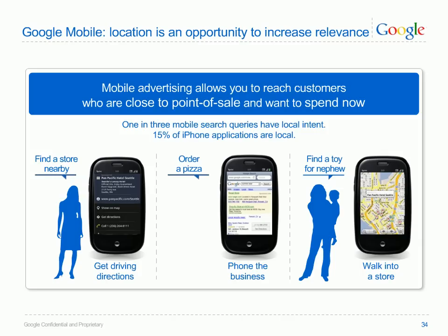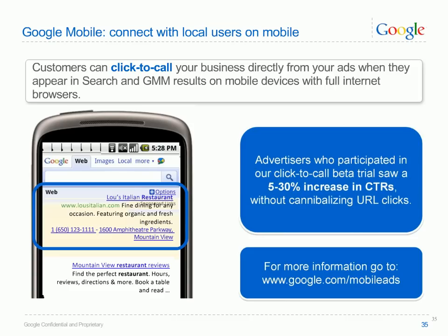Enhancing the location targeting services available through mobile advertising, customers have the ability to click-to-call on an ad when they search through mobile devices, thereby connecting potential customers to any business in a direct person-to-person manner. Recent trials of this feature showed an increase of up to 30% in the click-through rates of mobile ads using the click-to-call feature. For more information on the options available with Google in mobile advertising, visit www.google.com/mobile-ads.